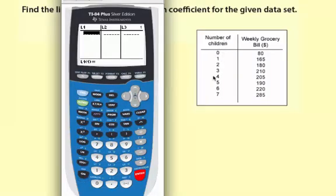So now my list one is going to be the number of children. List two is going to be the grocery bill. I'll go ahead and enter list one. Make sure you enter after each number.